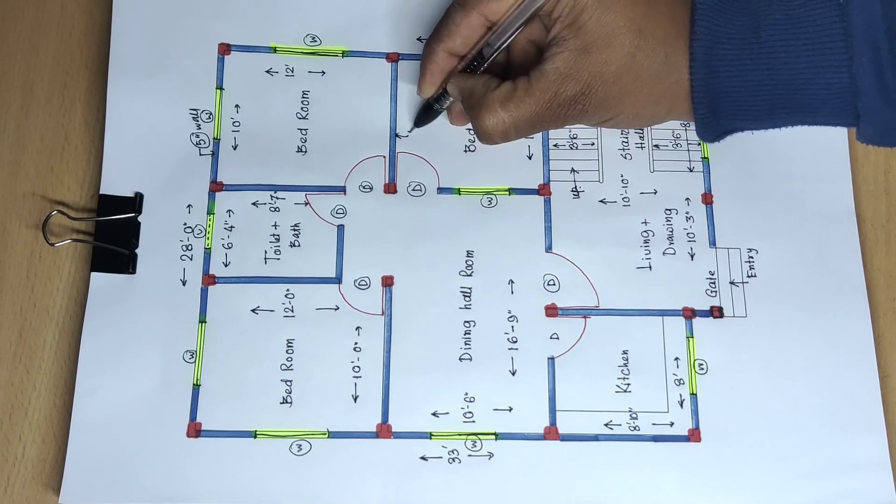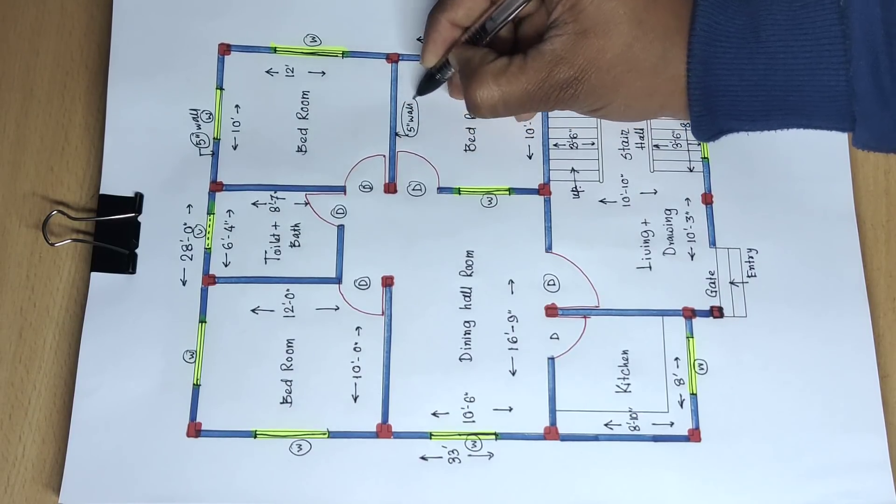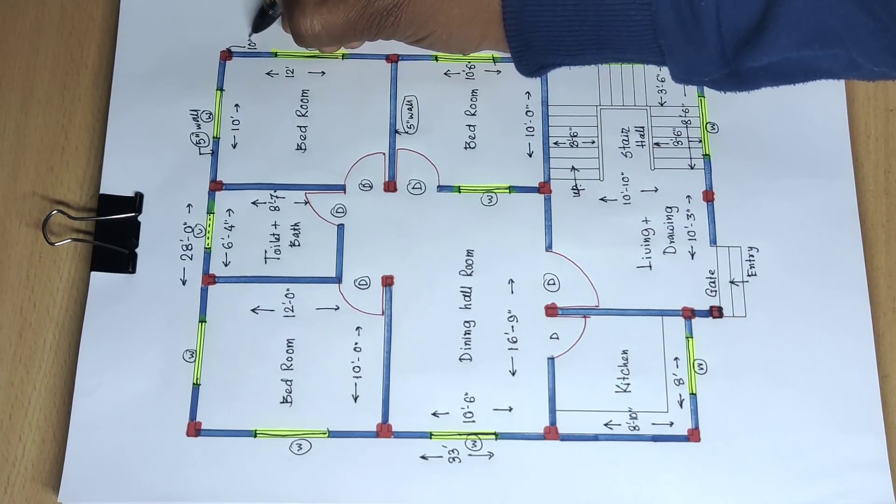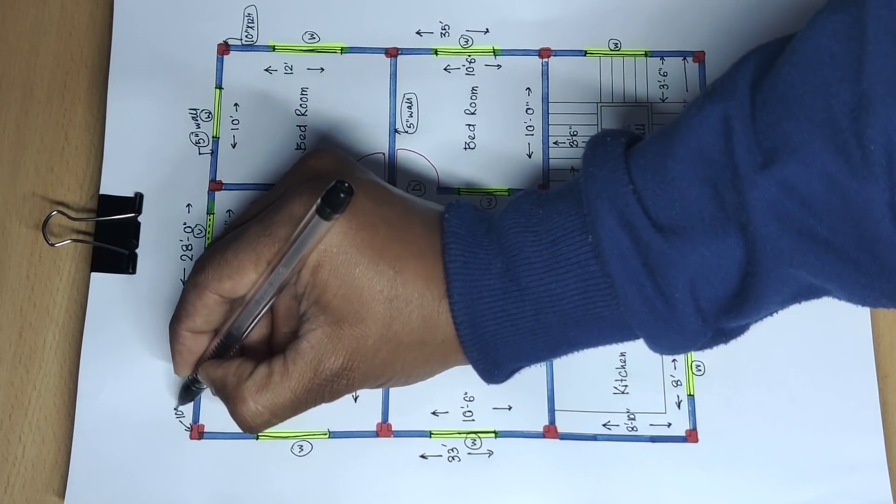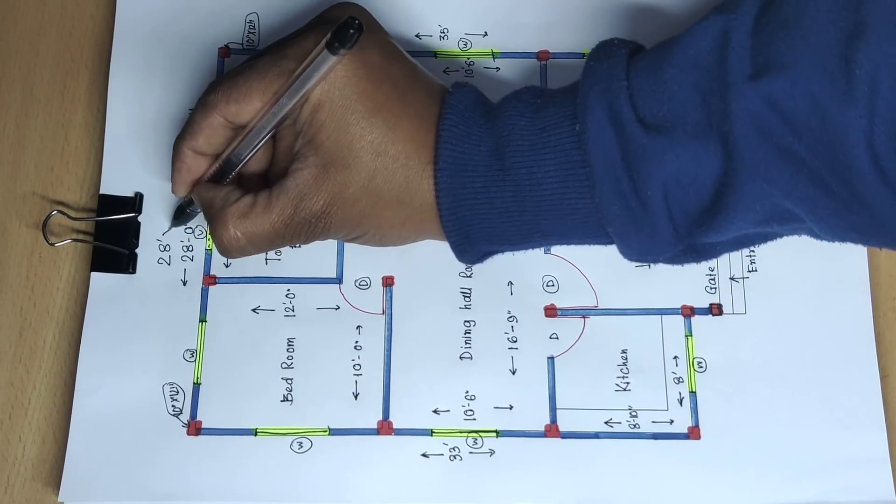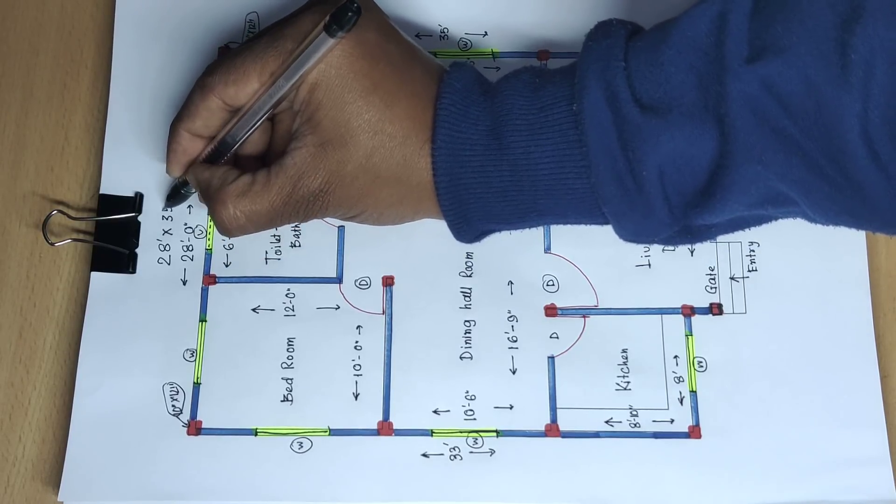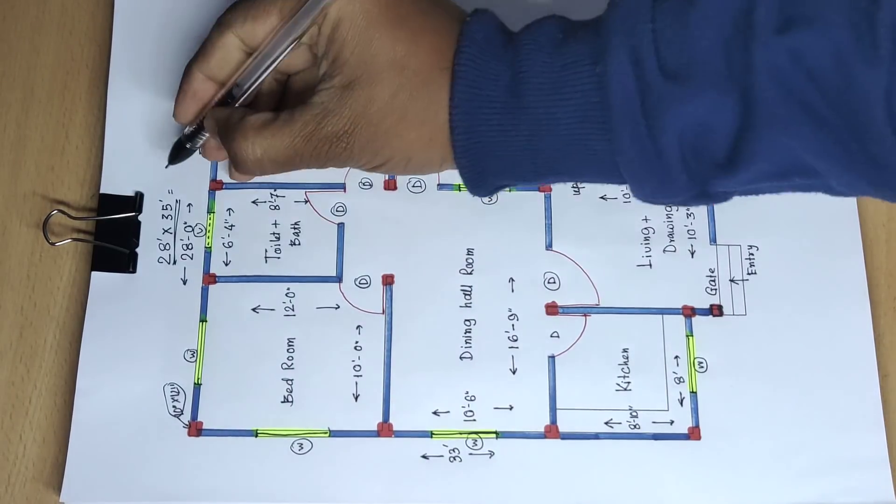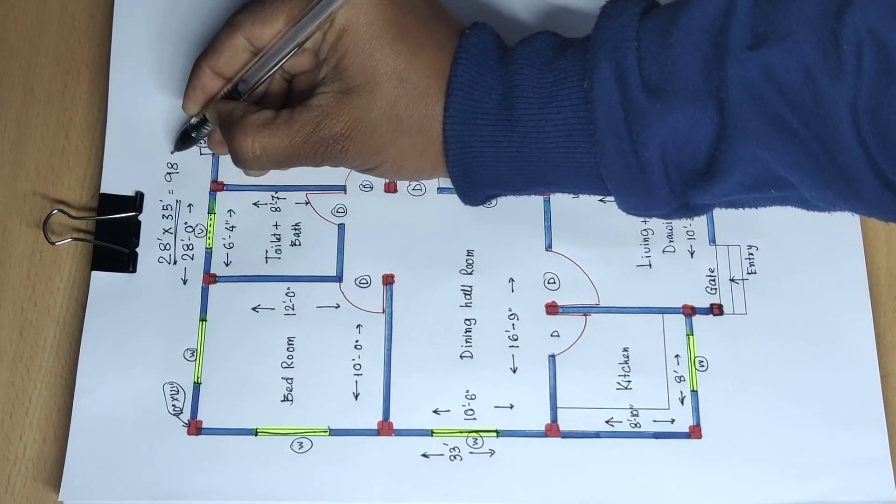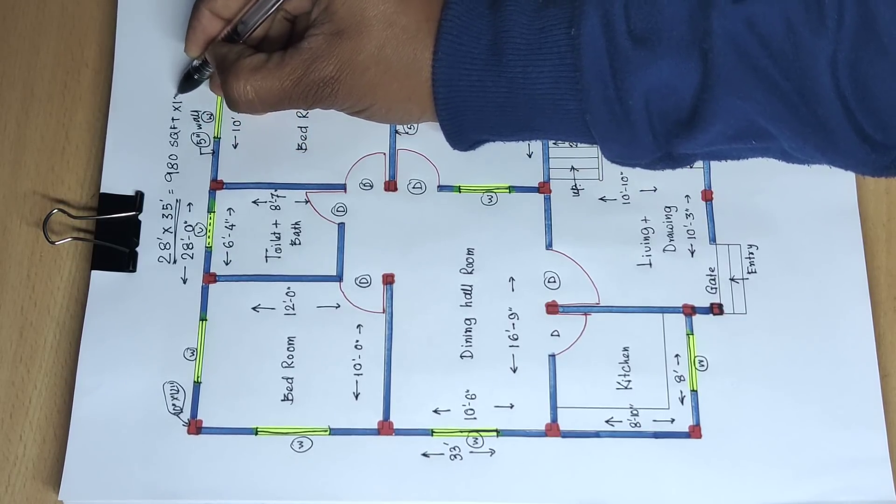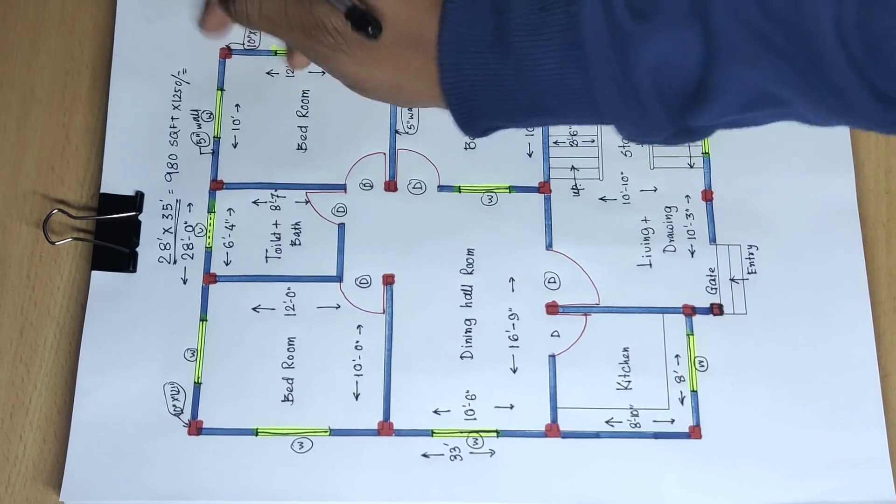Column size is 10 inch by 12 inch. Building size is 28 by 35 feet, equal to 980 square feet. At 1250 rupees per square foot, the total cost is 12,25,000 rupees. This is the building plan cost.